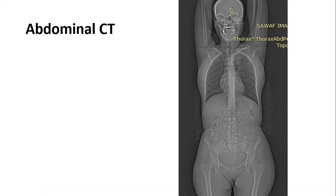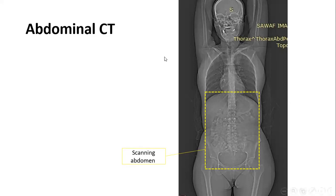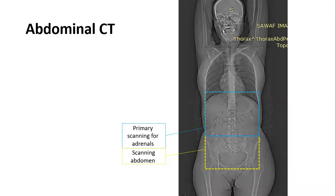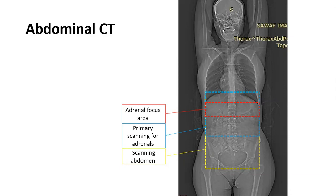Moving to abdominal CT: for positioning, the primary scan of the abdomen runs from the base of the diaphragm to the pubic symphysis. For dedicated adrenal scanning, we scan from the base of the diaphragm to the iliac crest, using thin slices of 1–3 mm to adequately evaluate the adrenal glands.